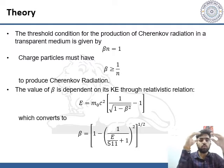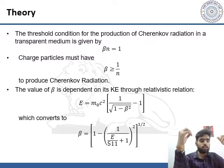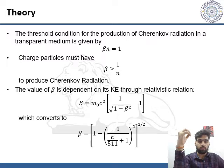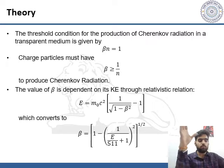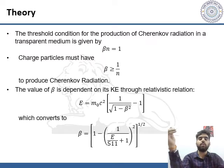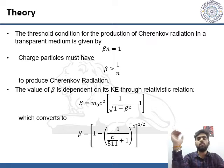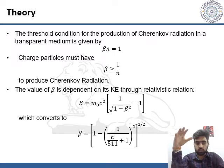Cherenkov radiation can only be produced when the radiation fulfills a certain condition: beta must be greater than 1/n, where beta is the relative phase velocity of the particle and n is the refractive index of the medium. The value of beta is dependent on its kinetic energy through its relativistic relation.